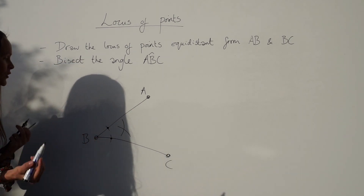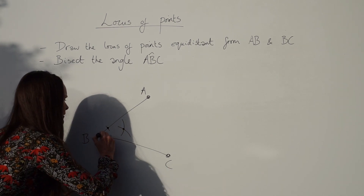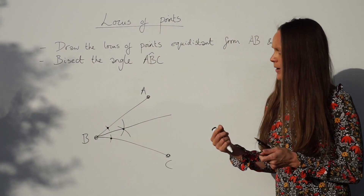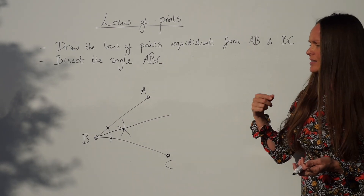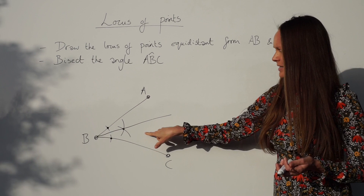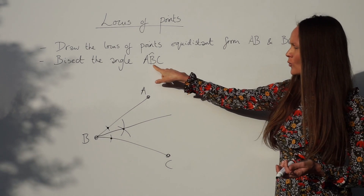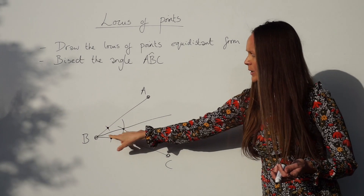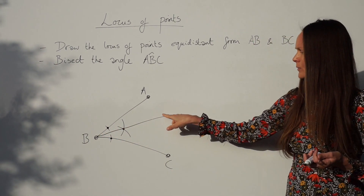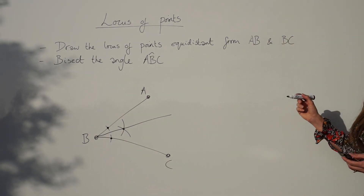Now that you've got all the arcs in place, take your ruler and join point B with where those two arcs cross, drawing a straight line. That line is the locus of points equidistant from AB and BC — wherever you are along that line it measures the same distance to line AB as to BC. Bisecting angle ABC means bisecting angle B, cutting it in half. A handy trick: look for the letter that's repeated in the question.